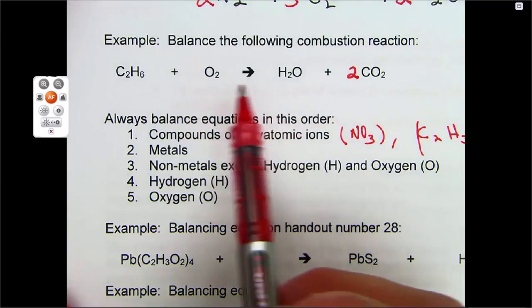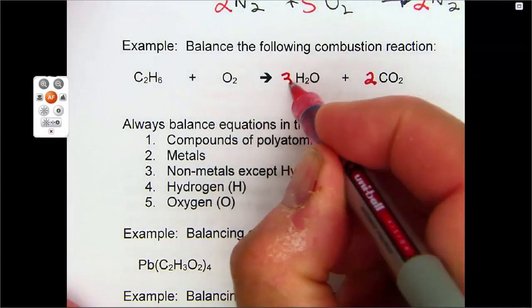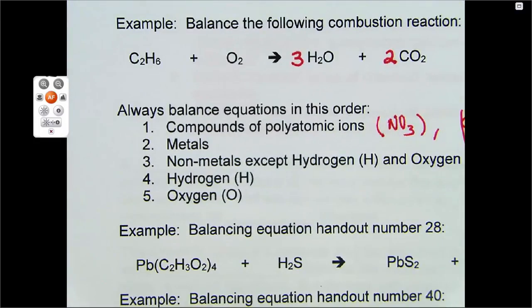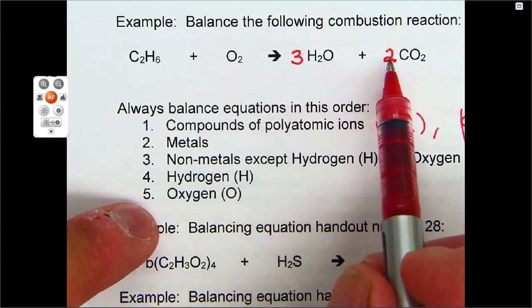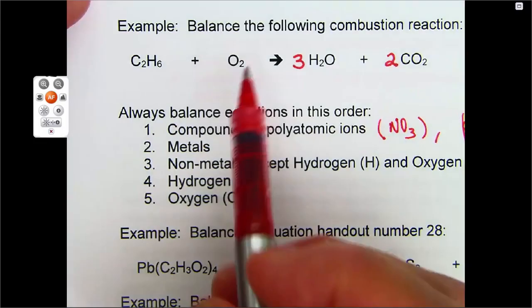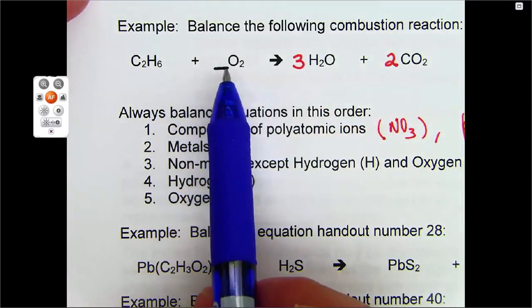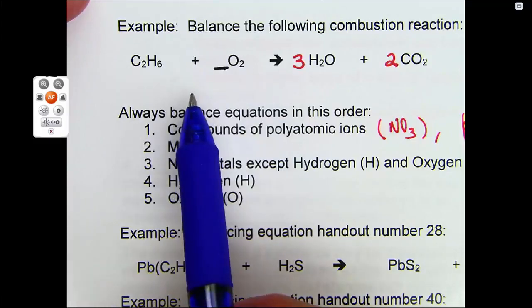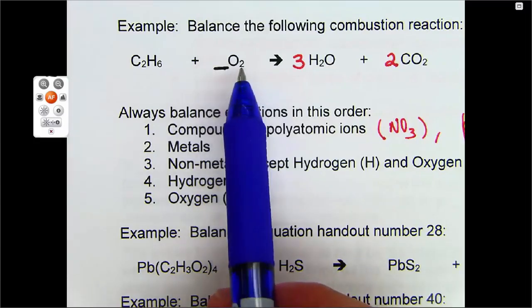Now we'll do hydrogen. There is six hydrogen here, two hydrogen here. So if we put a three there, we get six hydrogen. And now the oxygen total on the right is three times one. There's three oxygen here, plus two times two is four. There's seven oxygen on the right. And no matter what number I put in front of this O2, it's going to create an even number of oxygen on the reactant side over here. So three times two is six, four times two is eight. No matter what, once you multiply a number by two, it creates an even number.